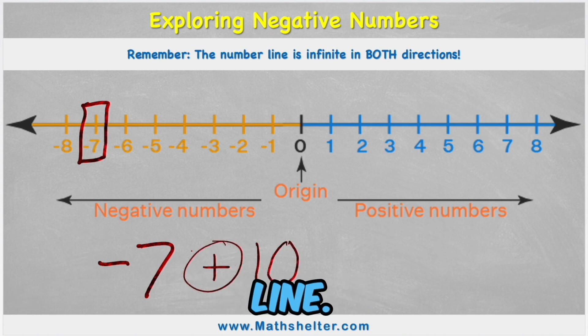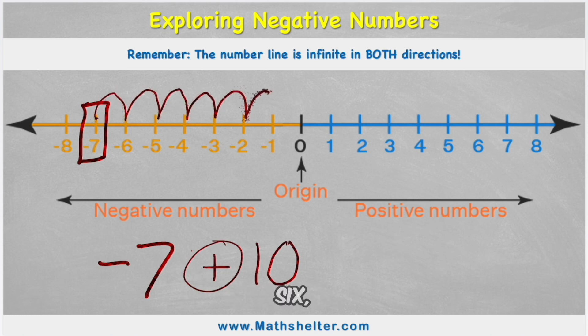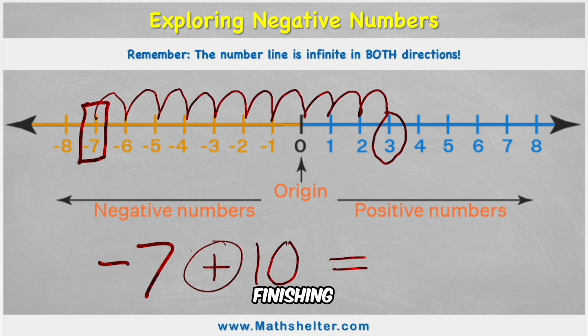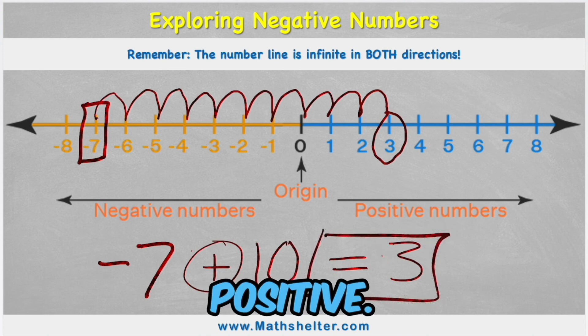Now, because I'm adding, I'm going to come up my number line. So I would go one, two, three, four, five, six, seven, eight, nine, 10. And I would land on three. So I would actually end up finishing with a positive three. And when we're talking about positives, we don't need to put the plus in front of it. If it's a number on its own, we just know it's positive.